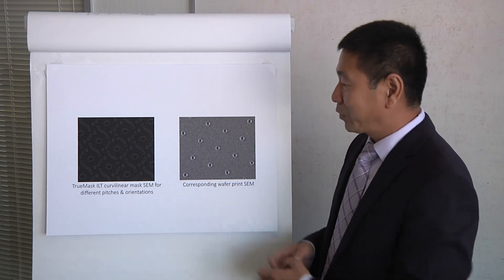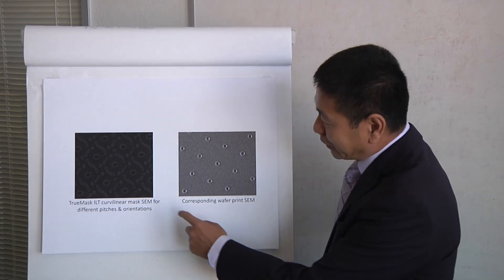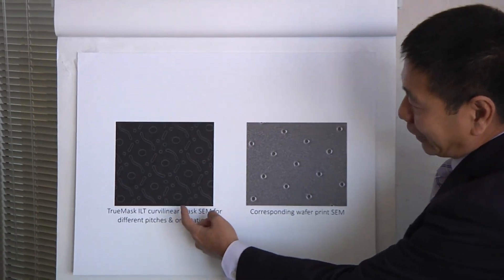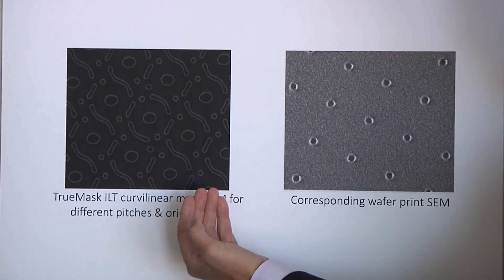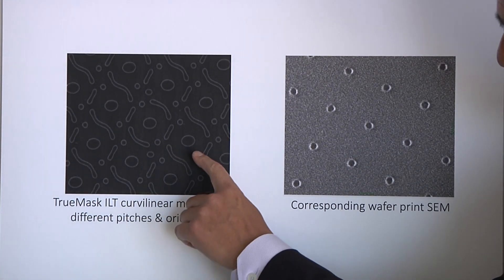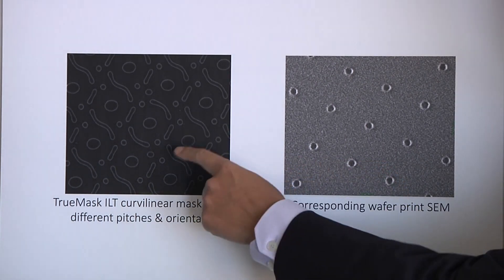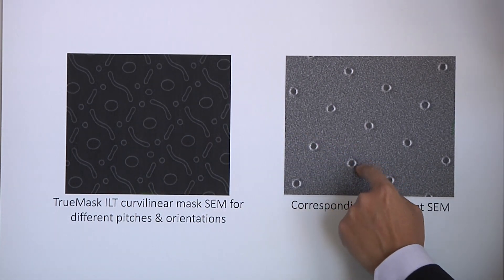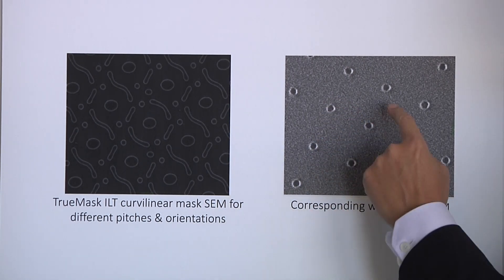So what are we looking at here? Here, I'm showing you an example of curvilinear data. On the left, this is a curvilinear mask pattern generated by our TrueMask ILT program. And the target, the pattern this mask wants to print, is on the right. They're basically a contact array.